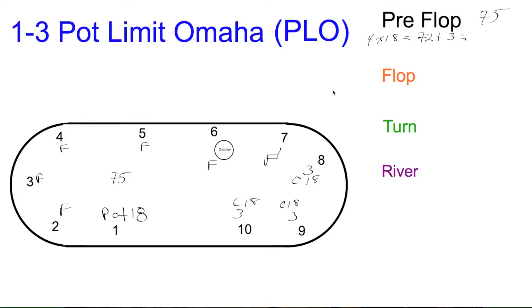Moving on to the flop. Burn and turn the flop. Action starting here in seat 8, and they check. Seat 9 checks. And seat 10, they're going to lead out and bet 35.